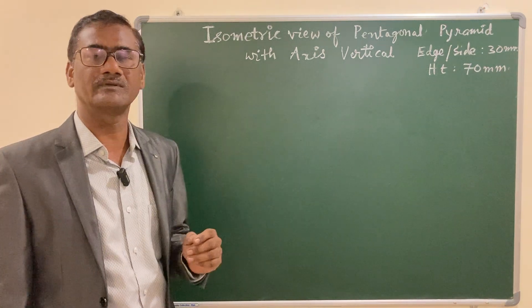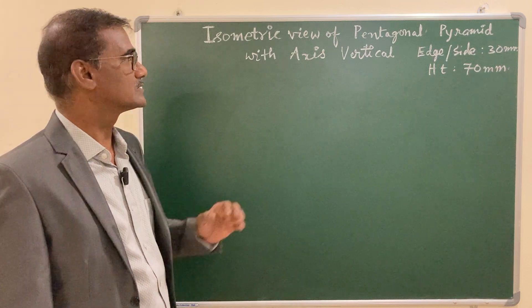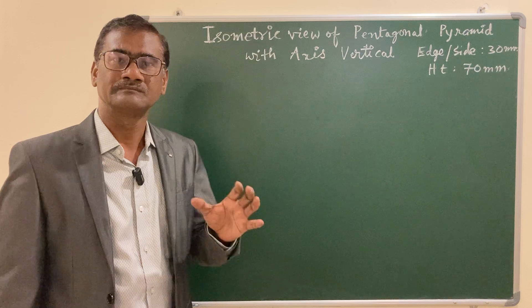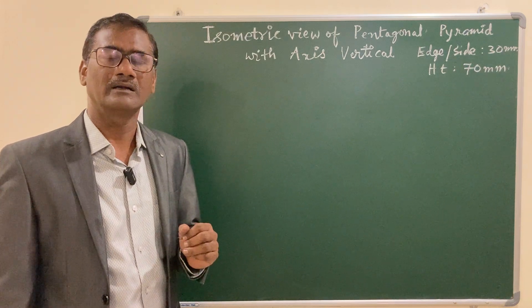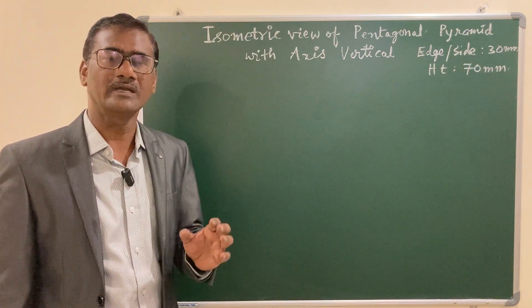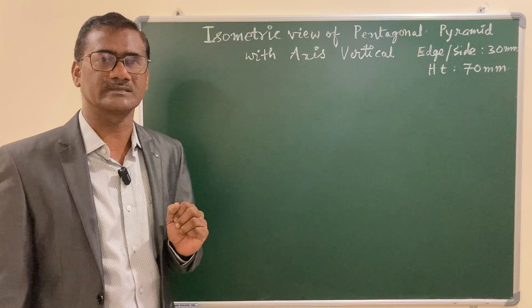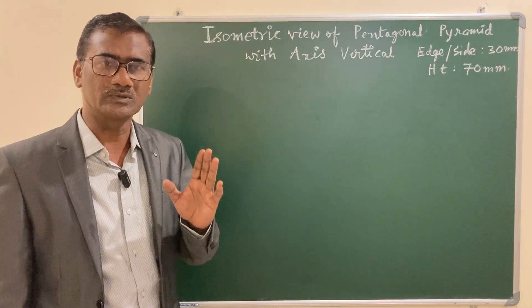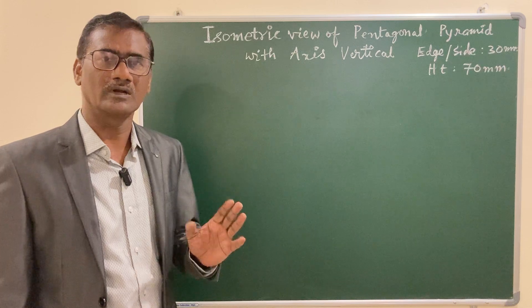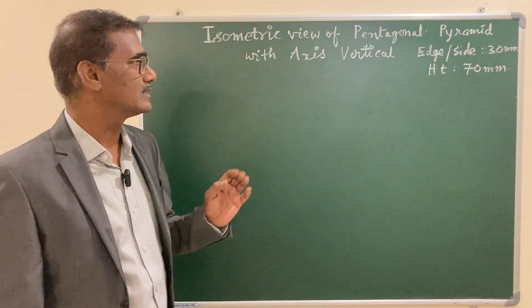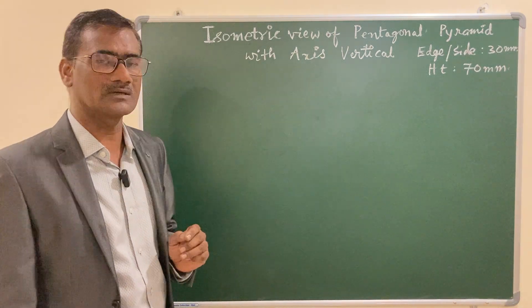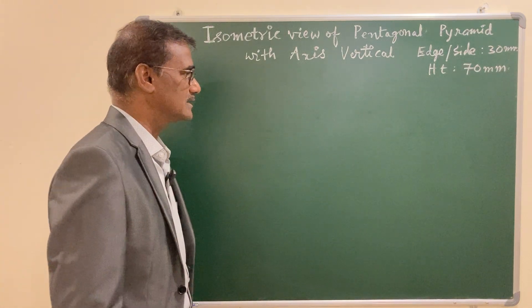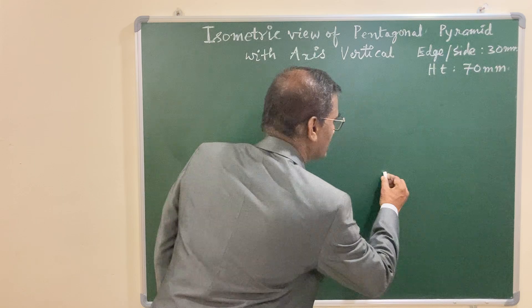The edge, which is also called the side, is given as 30 mm and the height of the pyramid is 70 mm. As you know, the base of the pyramid is a pentagon, which has non-isometric edges. Whenever you come across non-isometric edges, you need to draw the orthographic view of this particular base, so let us start drawing the orthographic view and complete the pentagon.